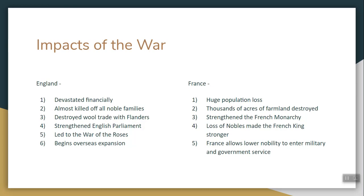The overall impacts of the war: England is devastated financially. A lot of money is spent and a lot of noble families are killed off — it will be very hard to trace English ancestry back past this war. The wool trade in Flanders is destroyed and England starts to develop its own wool trade, which, believe it or not, is going to end up causing the Industrial Revolution a couple hundred years later. The Hundred Years' War directly leads to the War of the Roses, an English civil war, and the strengthening of the English parliament. And it frees England from its concerns in France, leading to overseas expansion.